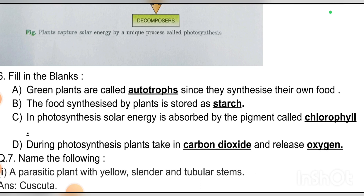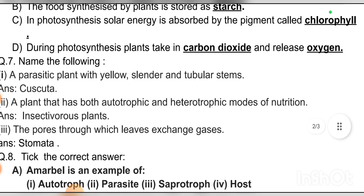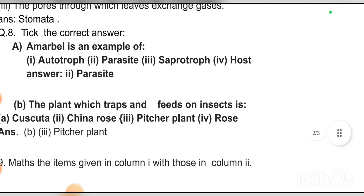Name the following: a parasitic plant with yellow, slender, and tubular stem — answer: Cuscuta. A plant that has both autotrophic and heterotrophic modes of nutrition — answer: insectivorous plants. The pores through which leaves exchange gases — answer: stomata. Take the correct answer: Amoeba is an example of a parasite.